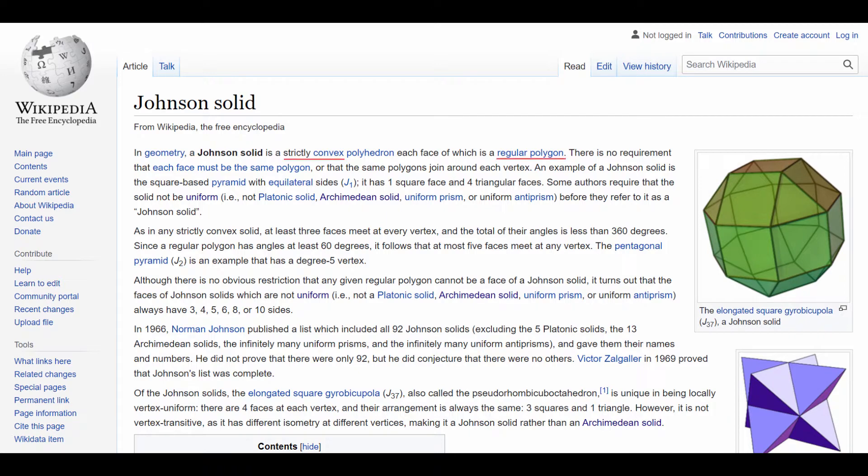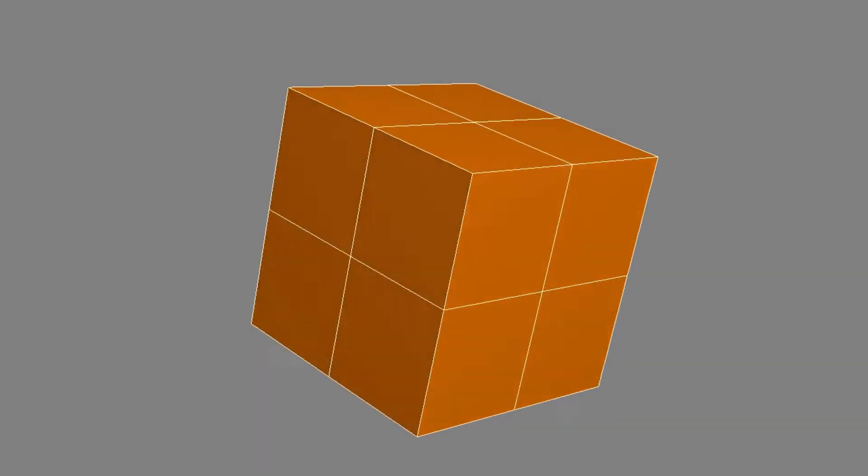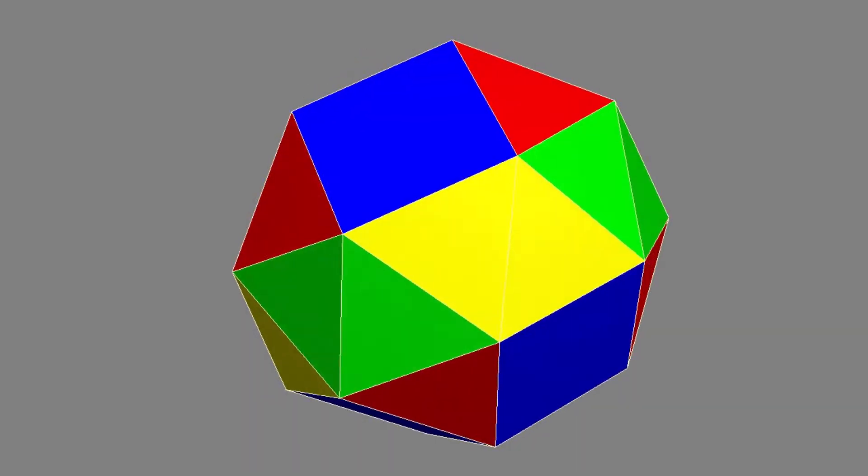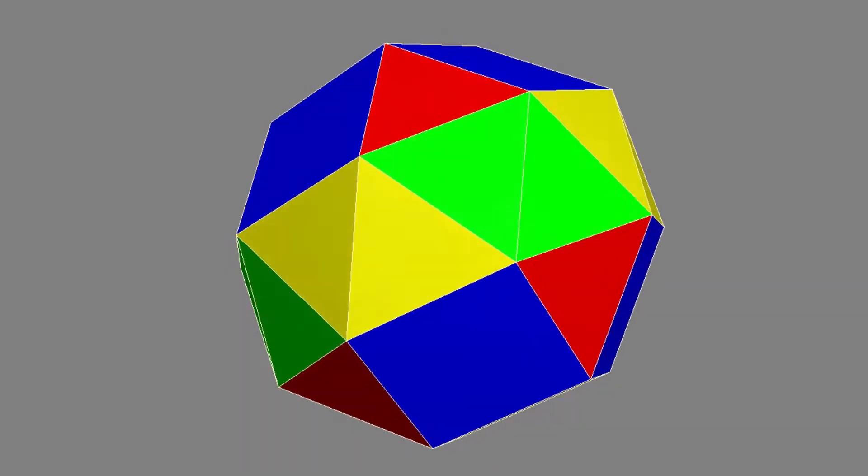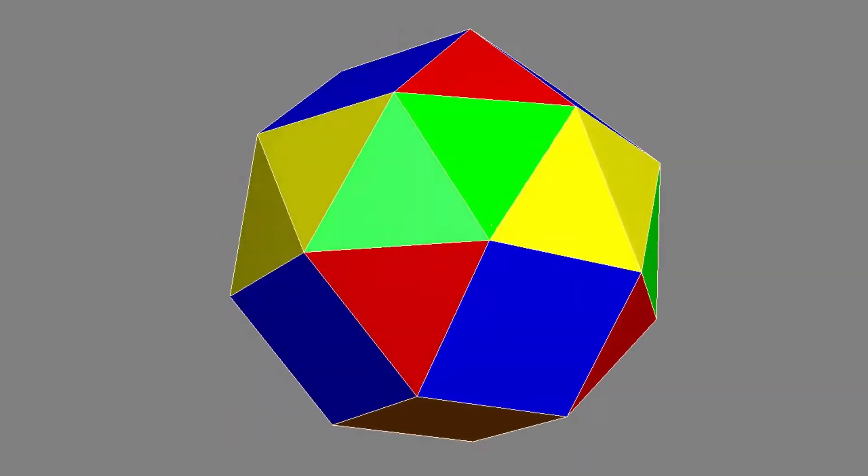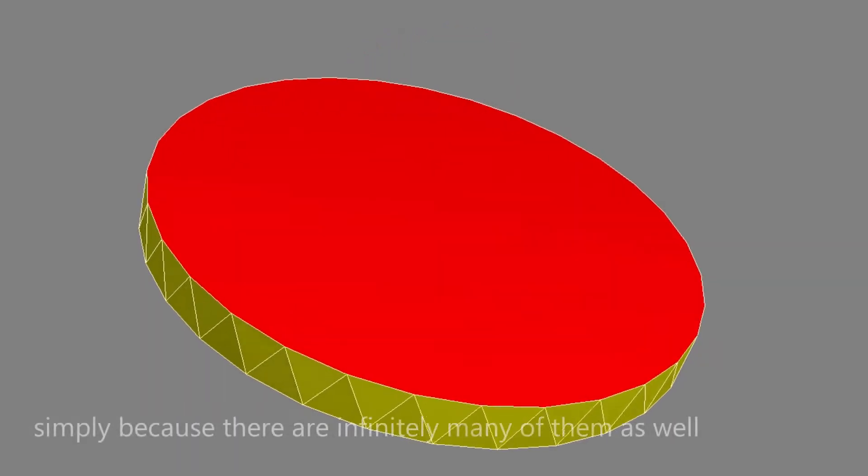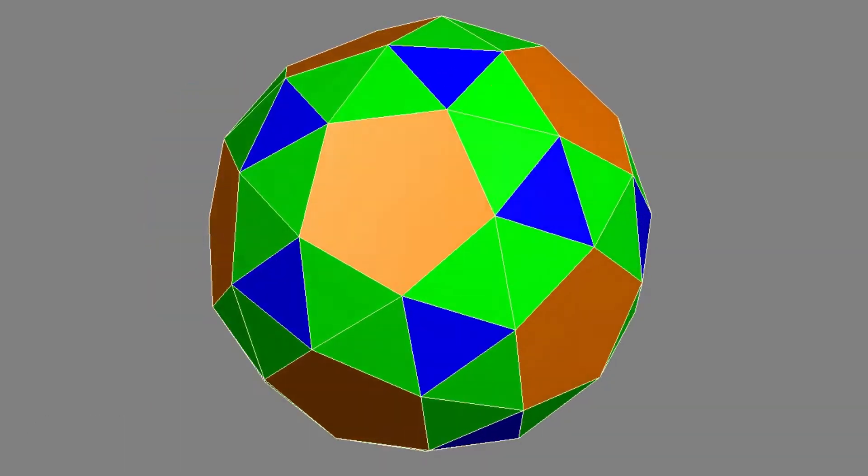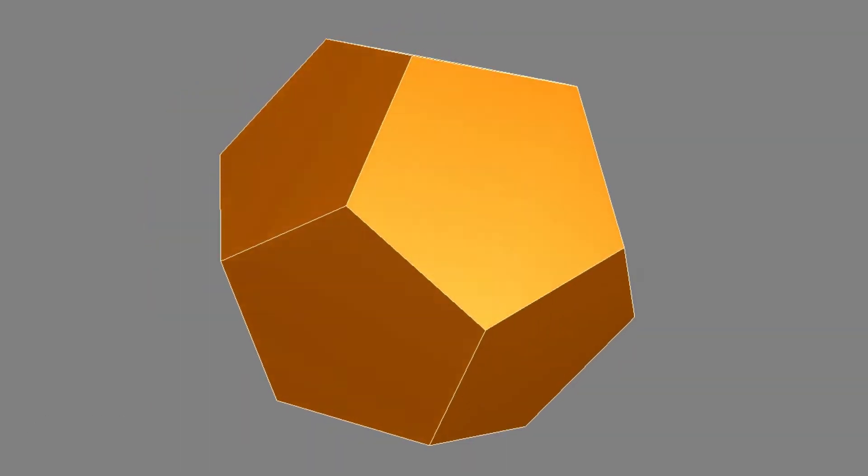Basically, they are just strictly convex regular-faced polyhedra. Strictly means that this is not allowed. It has been proven there are only 92 of them, excluding mirror images of chiral Johnson solids, prisms, antiprisms, Archimedean solids, and the Platonic solids.